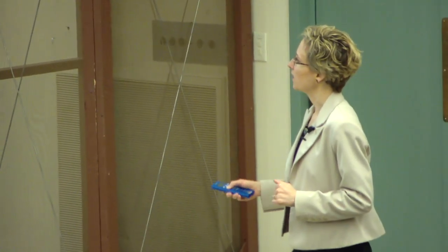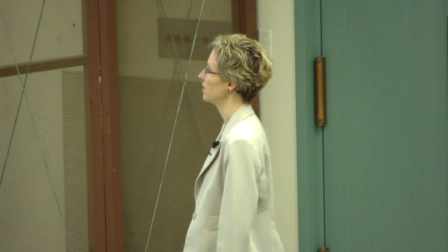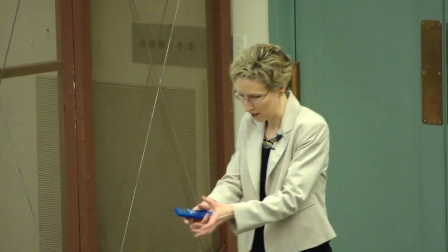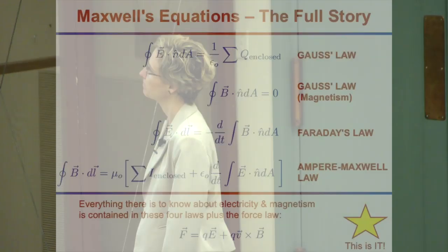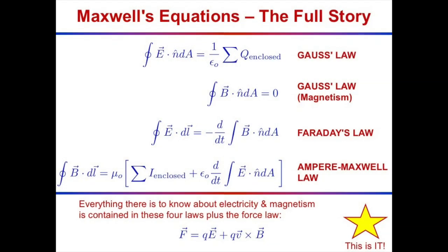This is everything there is to know about electricity and magnetism - contained in those four laws. We also implicitly need the force law: F = qE + qv×B, which tells us how fields affect charges and charges affect fields. All together, this empowers a global society - light, radio, wireless communications, the internet, the power grid, motors, integrated circuits, everything.